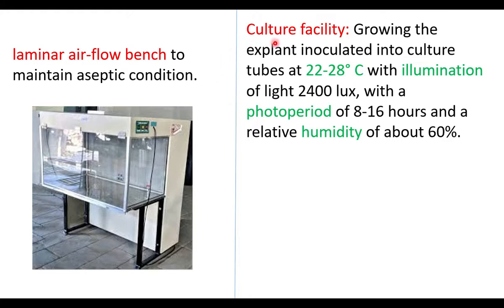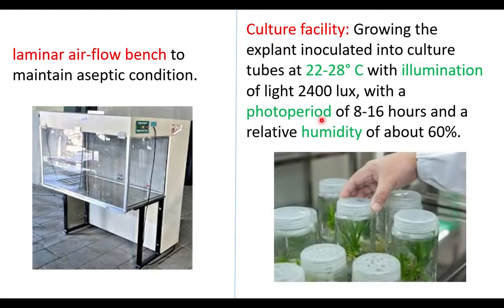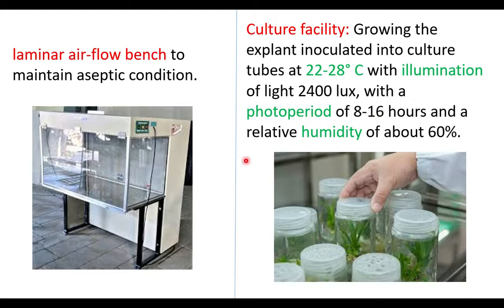Other culture facilities are needed to maintain controlled conditions in the lab. Temperature is maintained at 22 to 28 degrees Celsius using heaters or air conditioning. Light intensity is maintained at 2400 lux with a photoperiod of 8 to 16 hours — 8 hours light and 16 hours darkness. Humidity is maintained at about 60%. With all these lab facilities and parameters maintained, plants can be grown by means of plant tissue culture.